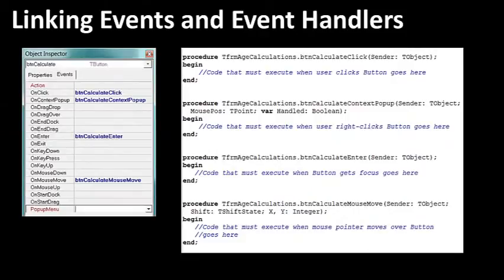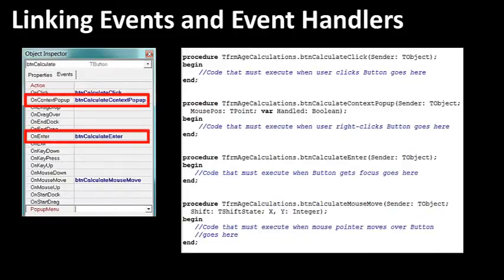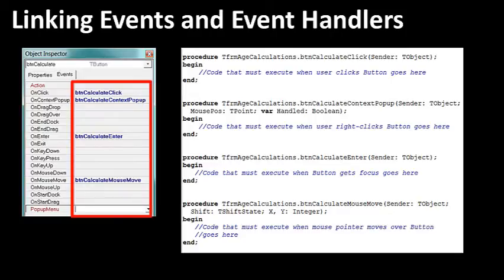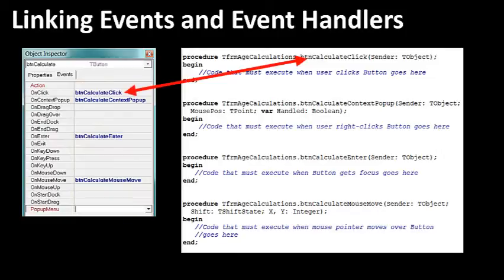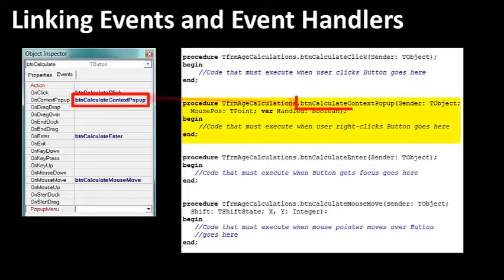Here I show the Object Inspector again. In the events tab, BTNCalculate now responds not only to the onClick event, but also to the onContextPopup event, the onEnter event, and the onMouseMove event. The names of the event handlers display in the cells next to each event's name. To create a default event handler you double click on the button in design time. To create additional event handlers, you simply double click on the cell next to the event's name. I double clicked on the cell next to onContextPopup and Delphi created an event handler called BTNCalculateContextPopup, linked to the onContextPopup event of BTNCalculate.